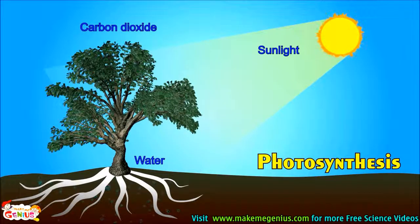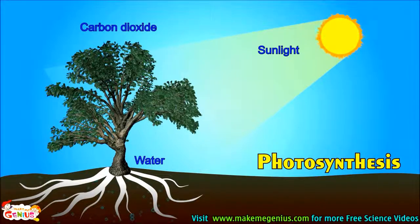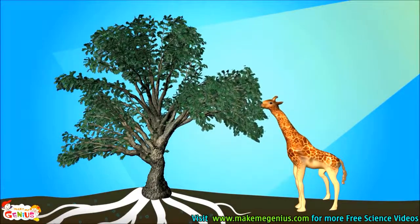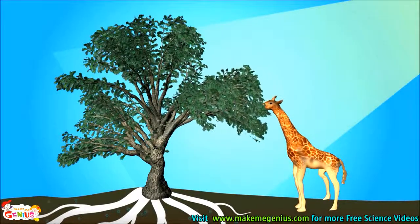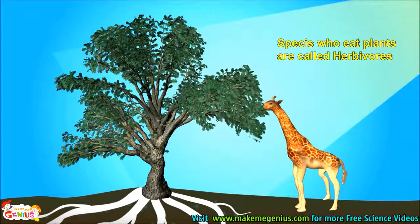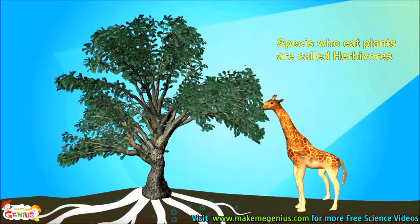This process is called photosynthesis. Plants make their own food, and all other species, like animals and we humans, are dependent on plants. A giraffe is coming — it is eating the plant. Species who only eat plants are called herbivores.